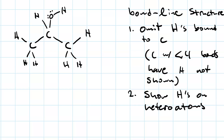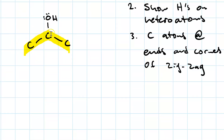But we do show the hydrogens on heteroatoms. So we're not going to show any of the hydrogens that are on the carbon-carbon backbone, but we are going to show the hydrogens that are attached to oxygen. So let's focus on the carbon-carbon backbone. Instead of drawing the carbon atoms explicitly, any time you've got an end or a corner of a zigzag, that's a carbon atom with four bonds — any bonds that aren't shown are to hydrogen.